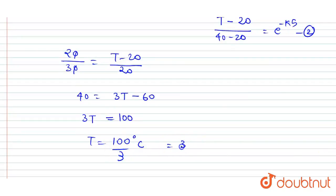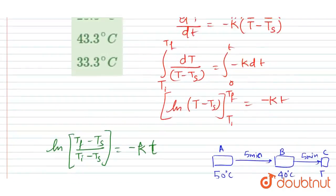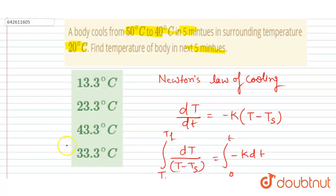Celsius, which equals 33.3 degrees Celsius. Now you can match the option. D option will be the correct one. Thank you.